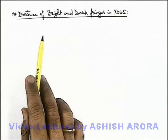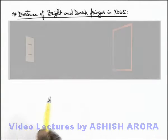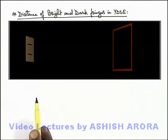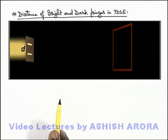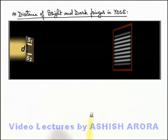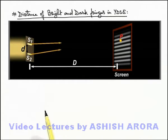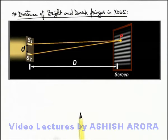Let's now discuss the distance of bright and dark fringes in Young's double slit experiment. Here you can see a typical setup of YDSE, in which on a slit plane an incident light beam illuminates sources S1 and S2, and on the screen at a distance D from the slit plane, we consider a point P, where the light waves from sources S1 and S2 are arriving, located at a distance x from the center of the screen.